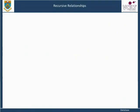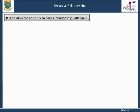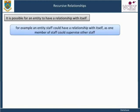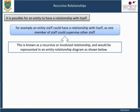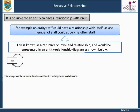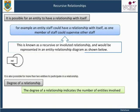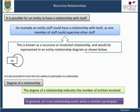The relationships we have seen so far have all been between two entities, but this does not have to be the case. It is possible for an entity to have a relationship with itself — for example, an entity 'staff' could have a relationship with itself, as one member of staff could supervise other staff. This is known as a recursive or involuted relationship, and would be represented in an entity relationship diagram as shown. It is also possible for more than two entities to participate in a relationship. The degree of a relationship indicates the number of entities involved — in general, an n-ary relationship exists when n entities participate.